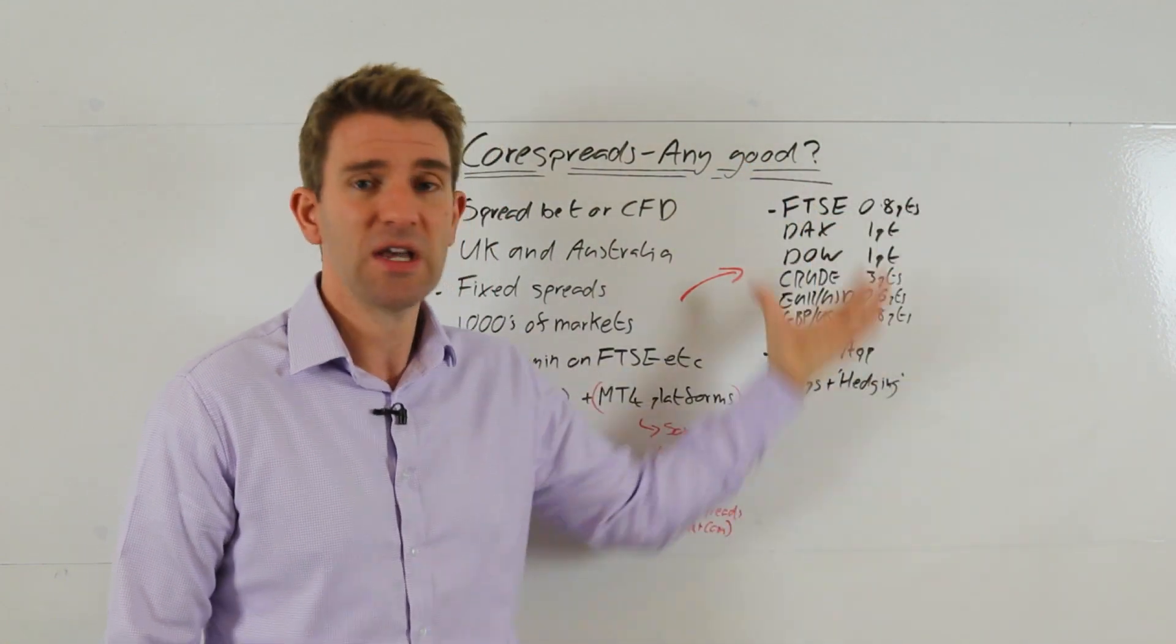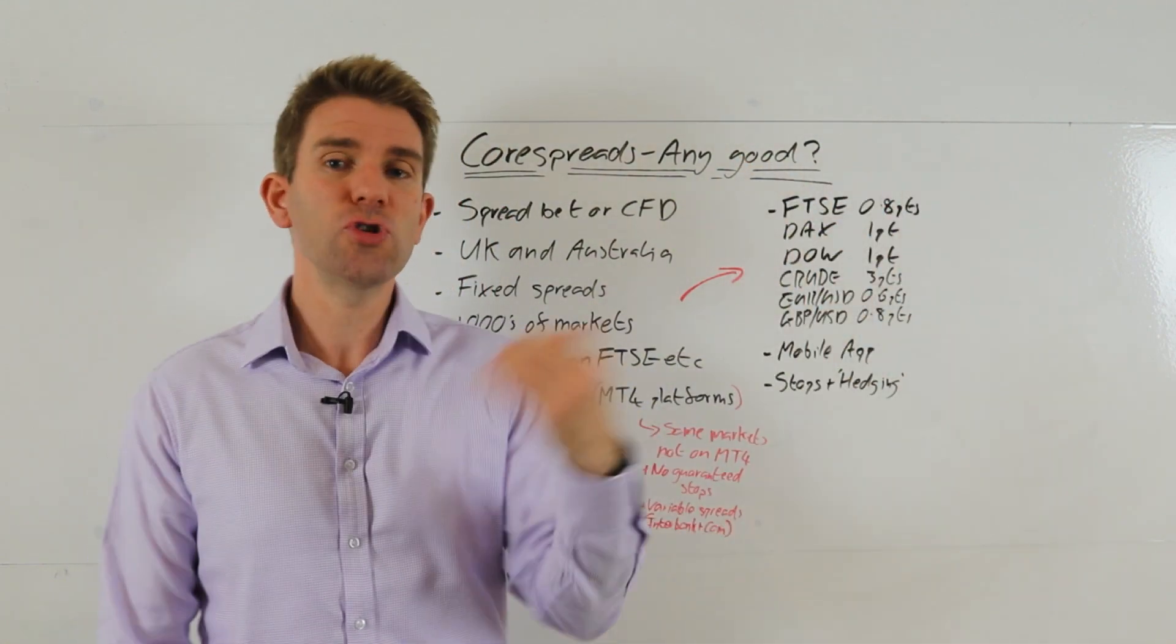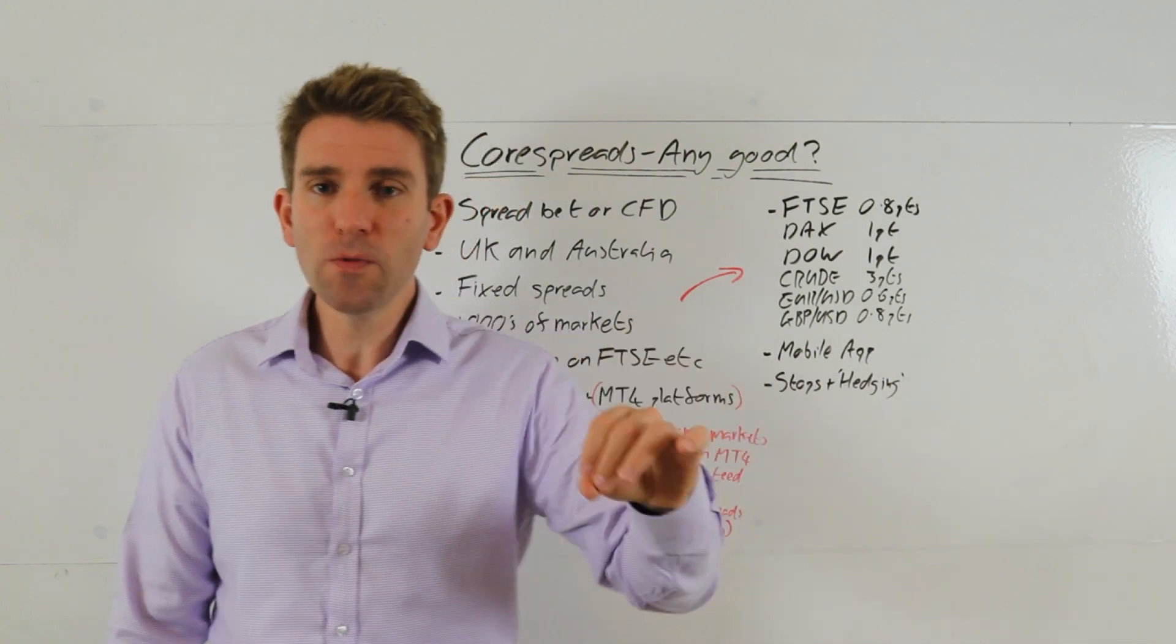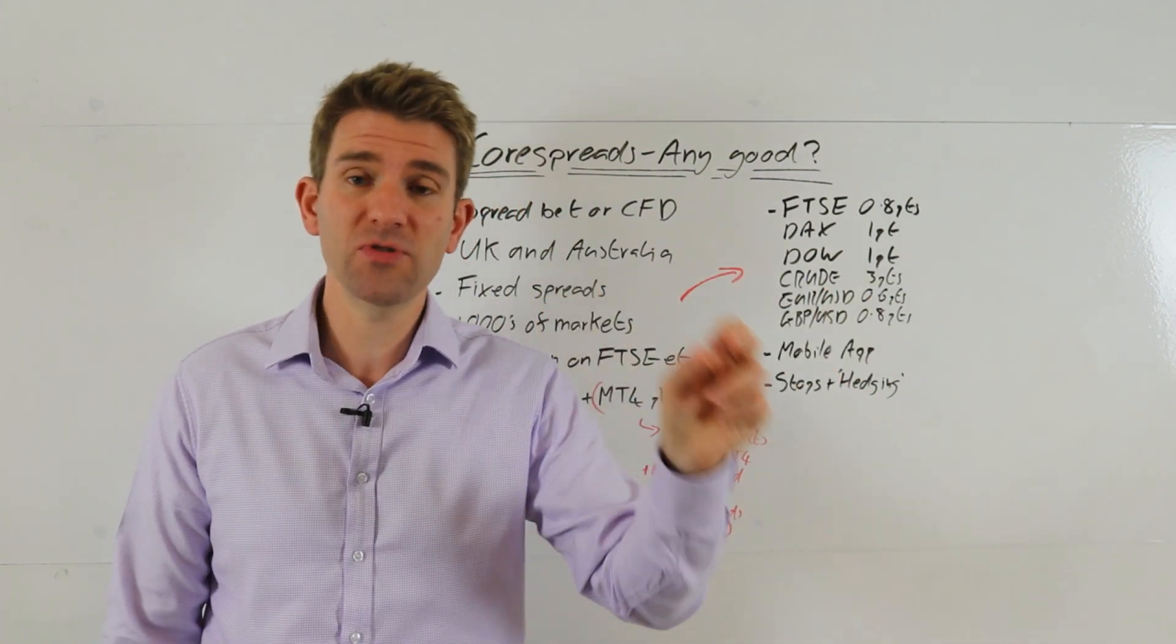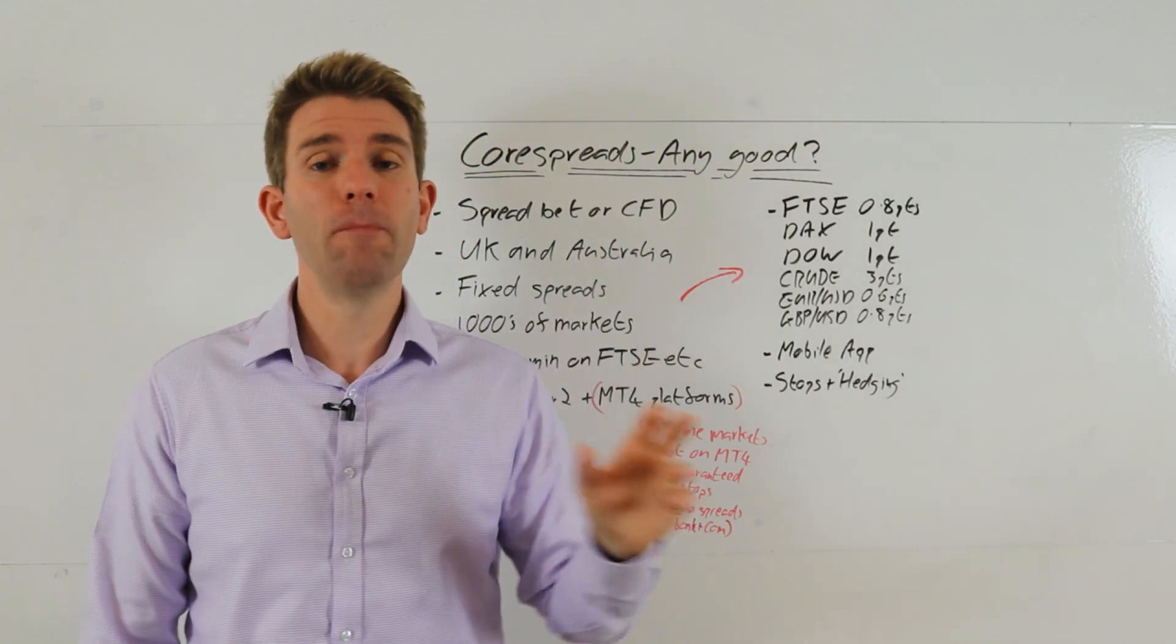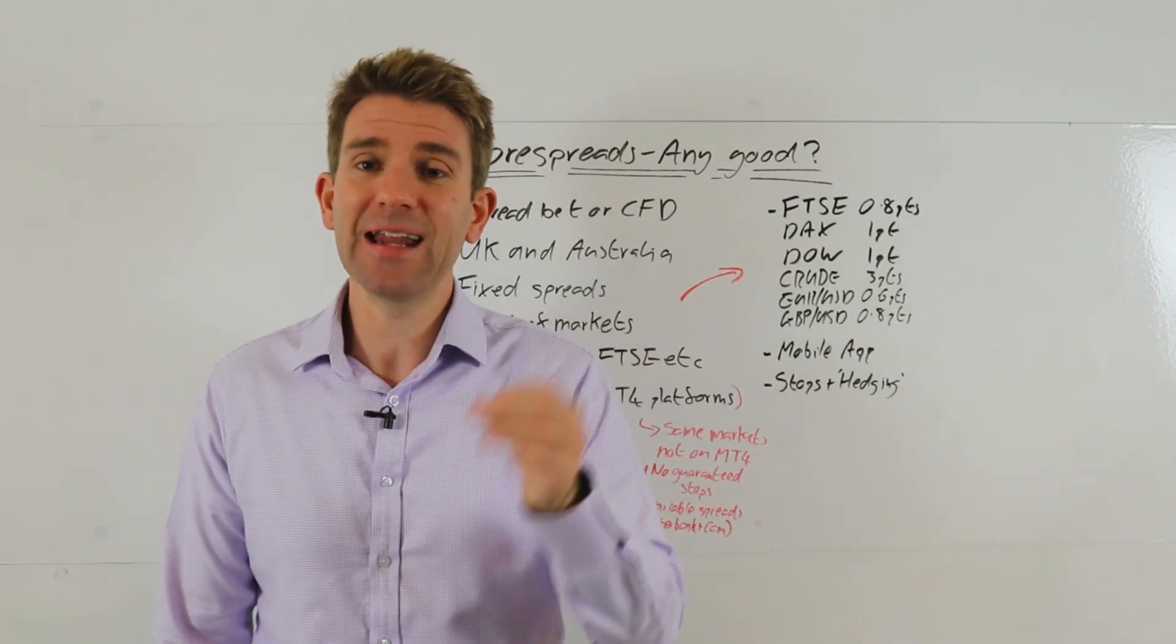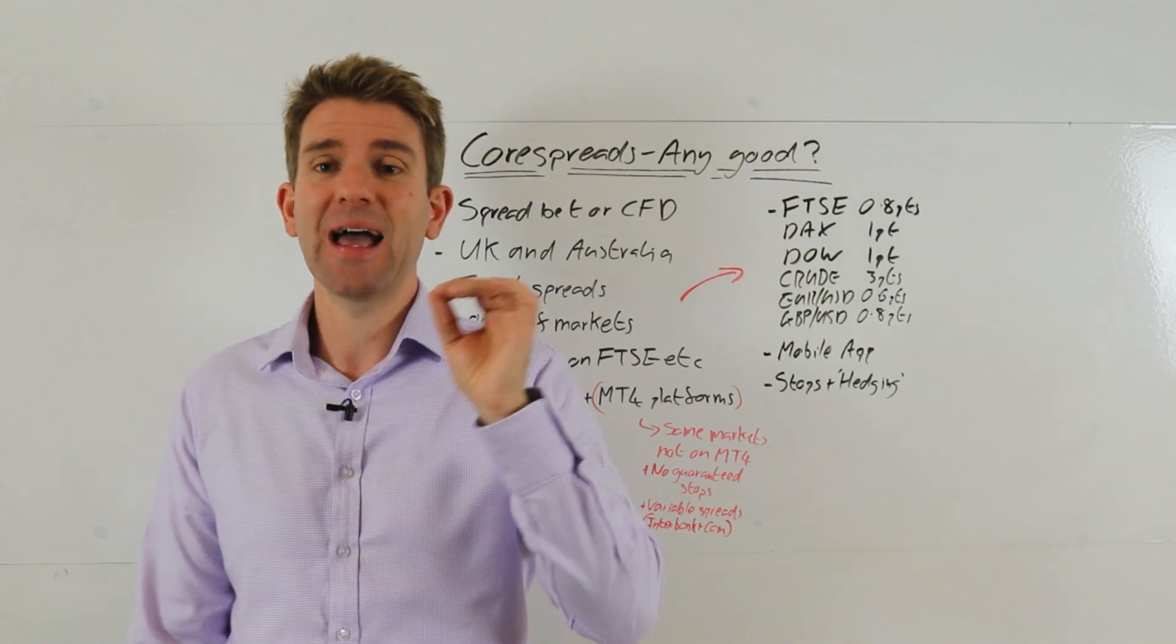We'll look at some of the spreads that they've got later on. Now they've got two platforms: they've got their Core Trader 2 platform, which is where they have fixed spreads and they're pretty tight - we'll look at those. And they have the MT4 platform, which is CFD only and it doesn't offer the same amount of markets.